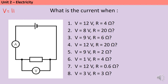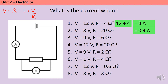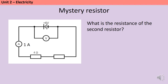Here are another eight questions for you to have a go at. Remember V equals I times R and therefore I equals V divided by R. Pause the video and then unpause when you're ready for the answers. For question one we're doing 12 divided by 4, which gives us 3 amps. For question two you should get 0.4 amps, then 1.5, 0.6, 4.5, 0.25, 20 amps and 1 amp.